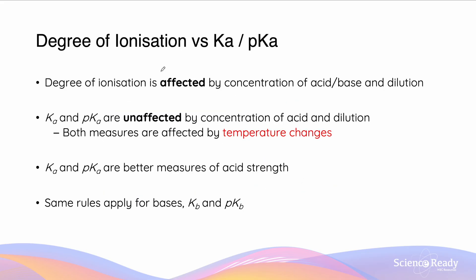The degree of ionization is affected by the concentration of acid/base and dilution, but Ka and pKa are unaffected by concentration and dilution — though both are affected by temperature changes. Since a change in concentration or dilution does not shift the equilibrium position (only temperature does), Ka and pKa are better measures of acid strength. The same rules apply for bases with their Kb and pKb values.